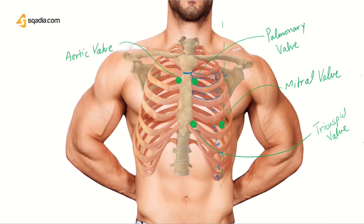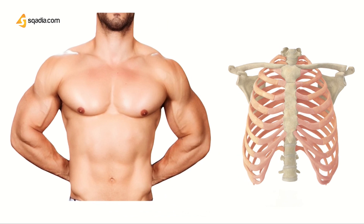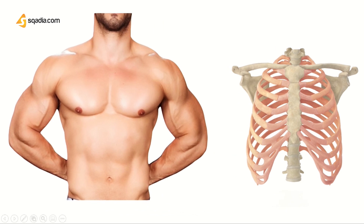We can also use these intercostal spaces to identify surface markings. For example, if somebody has a stab wound, we count — two, three, four, five — so this is the fifth intercostal space. We would say this is a stab wound in the fifth intercostal space at the mid-clavicular line.